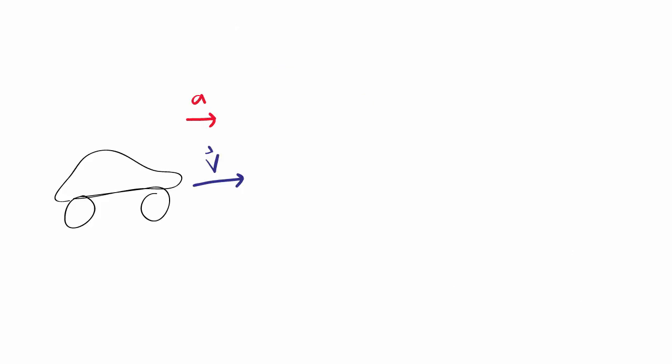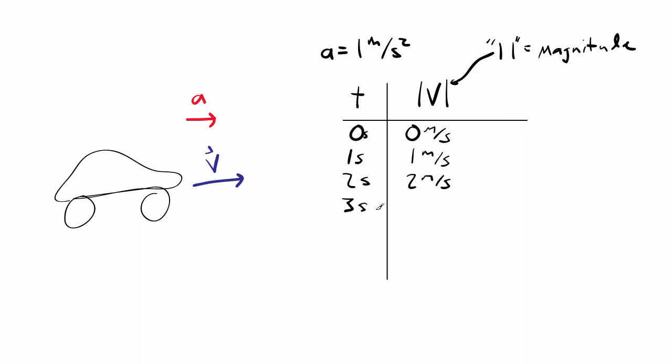Think of the units this way. If you have an object that is moving at some velocity in the positive x direction but is accelerating at 1 meter per second squared in the positive x direction, that means that the object's velocity will increase by 1 meter per second for every second of time that passes.